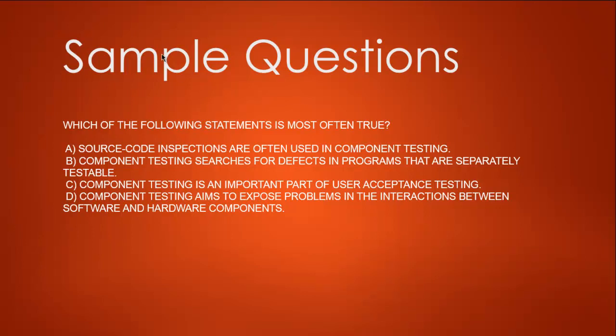Source code inspections are often used in component testing - this doesn't look right; we are testing the components, not exactly white box testing, so option A is out. Option B - component testing searches for defects in programs that are separately testable - this is true. Option C - component testing is an important part of user acceptance testing - this is again not true.